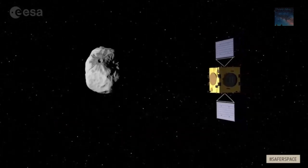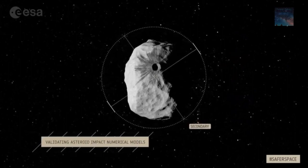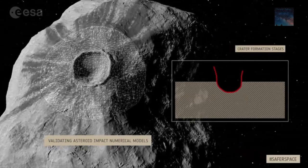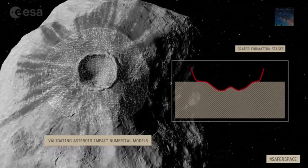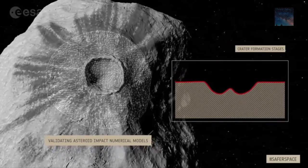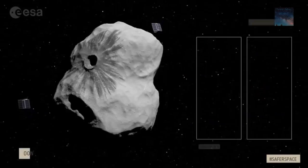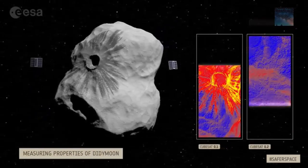After the impact, all connections to the binary asteroid will stop and essential information will be missing. At this point, the spacecraft Hera will be heading to the location to measure all possible effects of NASA's intentional collision with the asteroid.